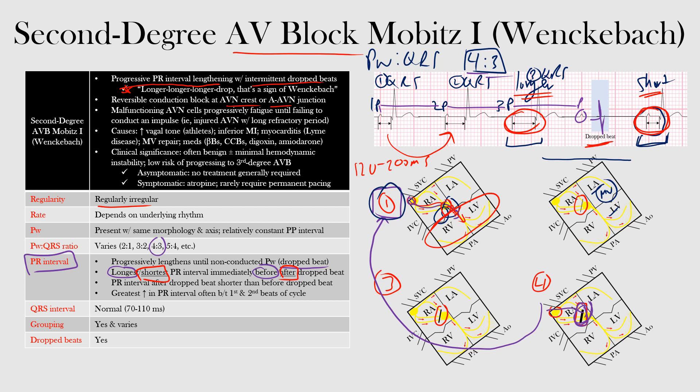We obviously have dropped beats because conduction cannot pass through to the ventricles. That is the end of this lecture. We discussed second-degree AV block Mobitz type 1, or Wenckebach, including its mechanism, EKG features, potential causes, and clinical significance.